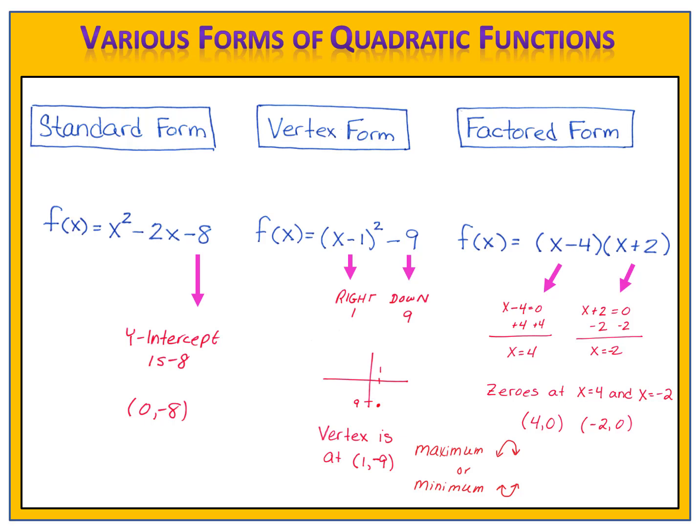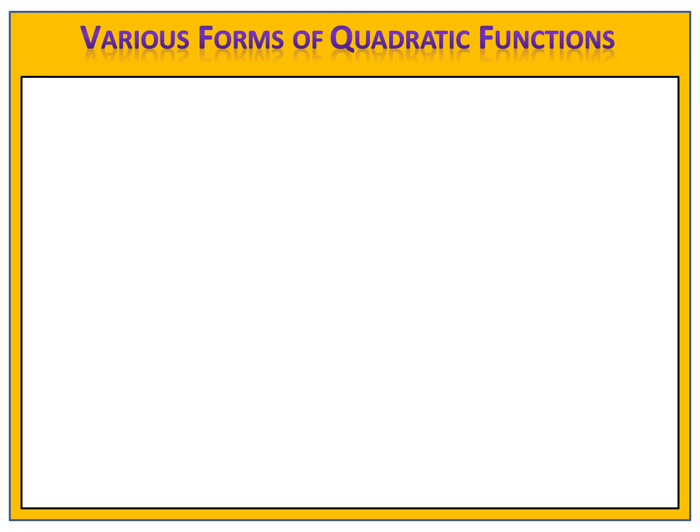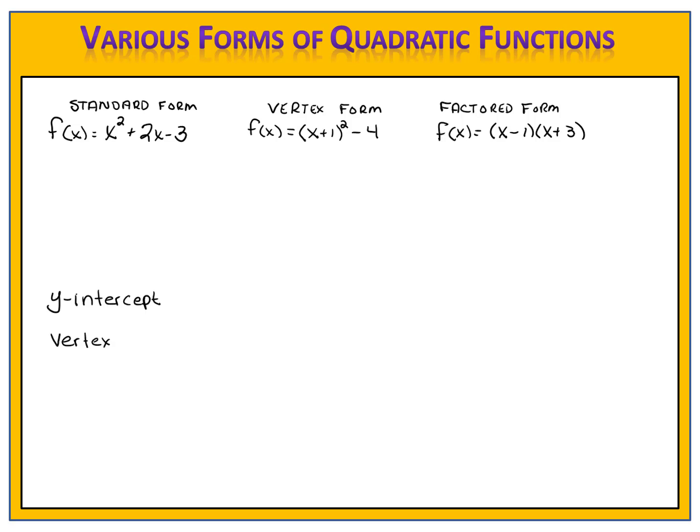So let's take a look at an example and see if we can determine which form is best to find each piece of information. Suppose we have a quadratic function. The function is written in all three forms: standard form, vertex form, and factored form. We want to use these various forms of the function to find the following: the y-intercept, the vertex, the maximum or minimum, and the coordinates of the x-intercepts or zeros of the function.